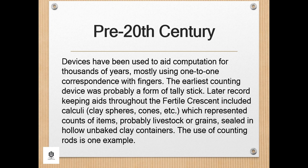During the pre-20th century, devices have been used to aid computation for thousands of years, mostly using one-to-one correspondence with fingers. The earliest counting device was probably a form of tally stick. Later, record-keeping aids throughout the Fertile Crescent included calculi, or clay cones, which represented counts of items, probably livestock or grains, sealed in hollow unbaked clay containers. The use of counting rods is one example.